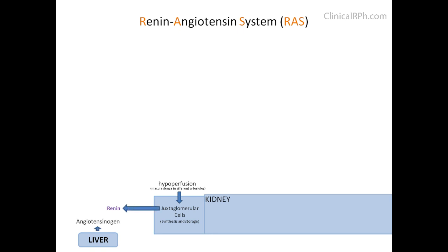The liver synthesizes and releases angiotensinogen into the bloodstream, but it is not timed with any acute event. Using the enzyme renin, angiotensinogen gets converted to angiotensin 1.